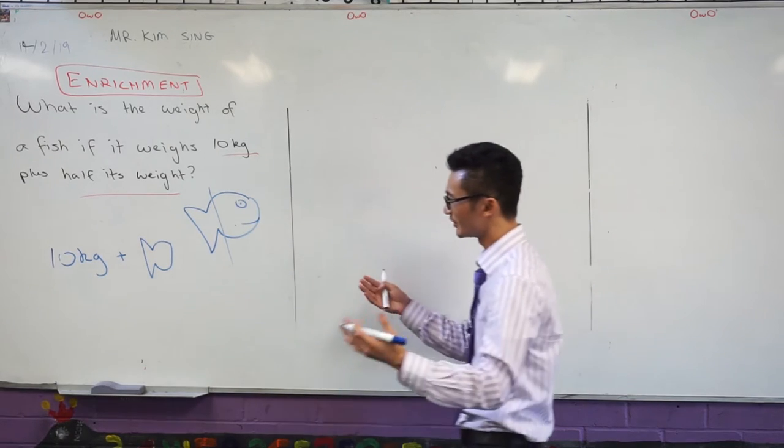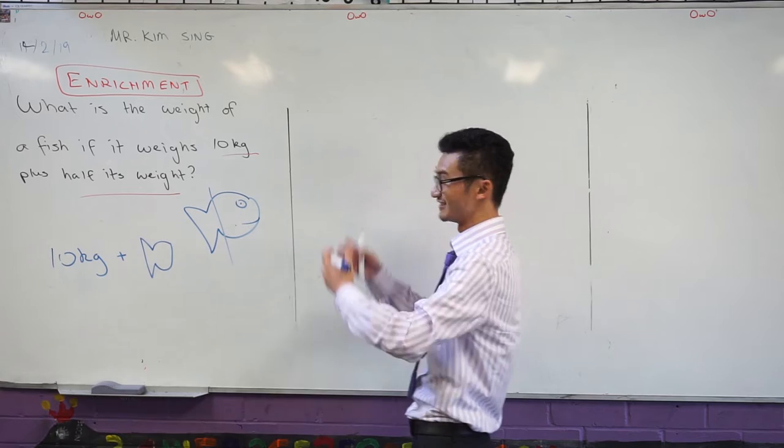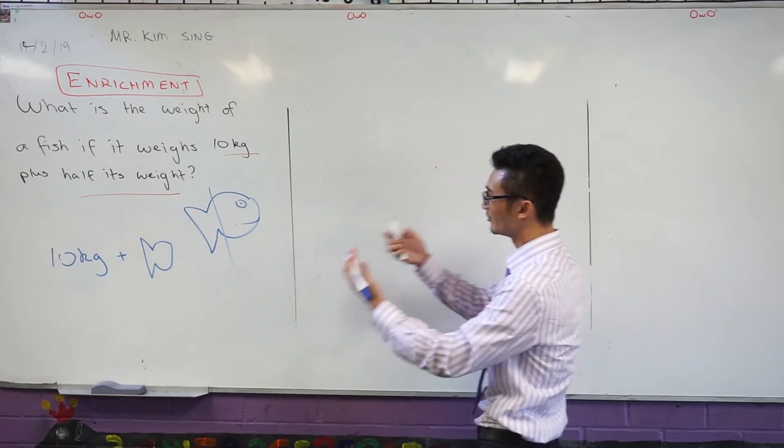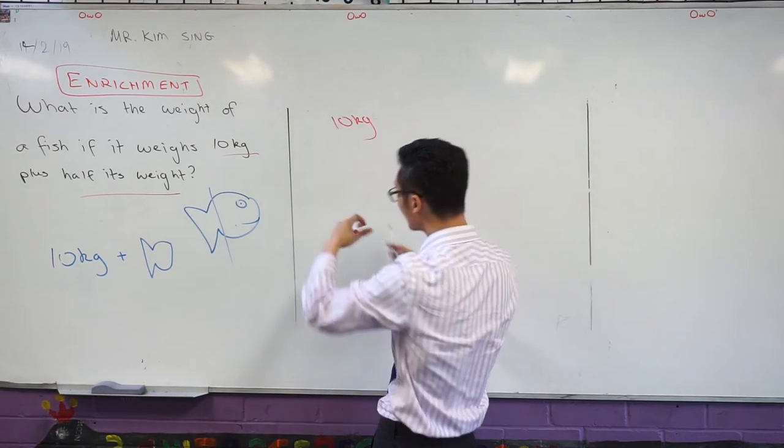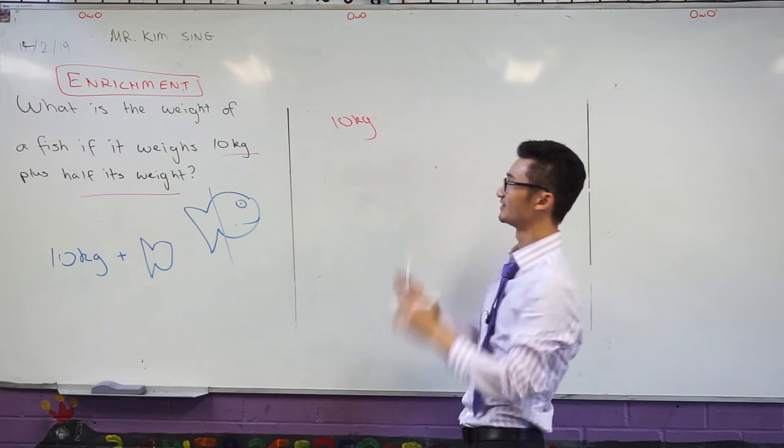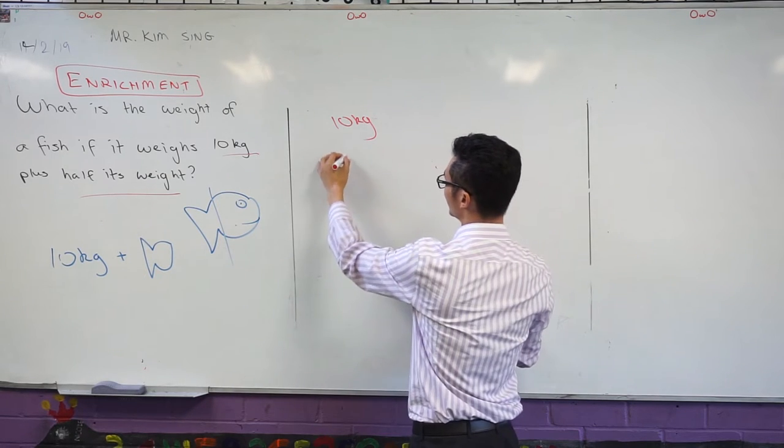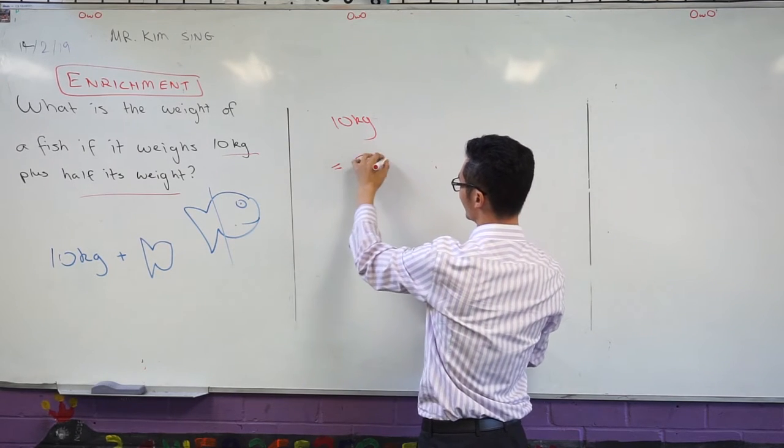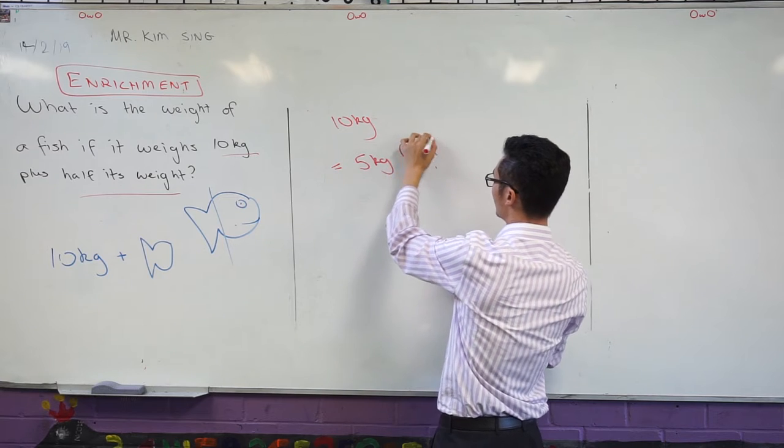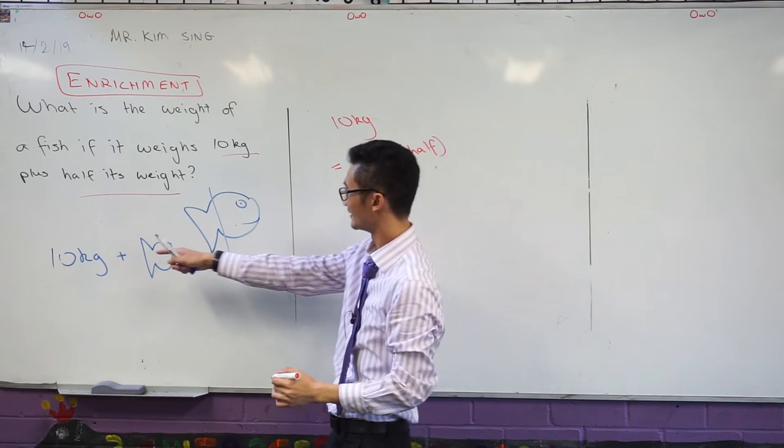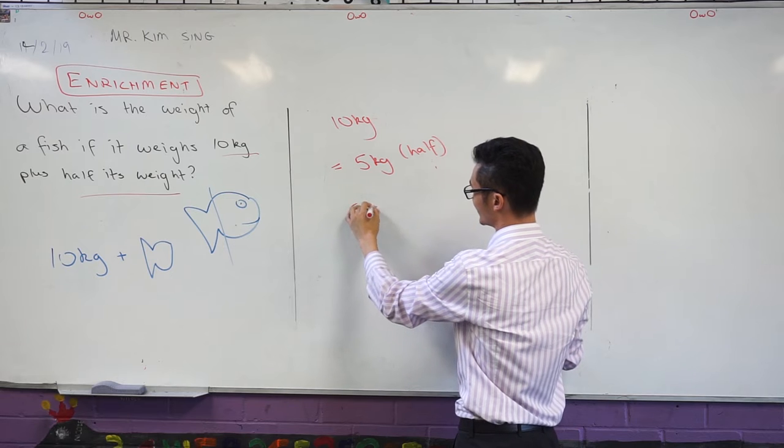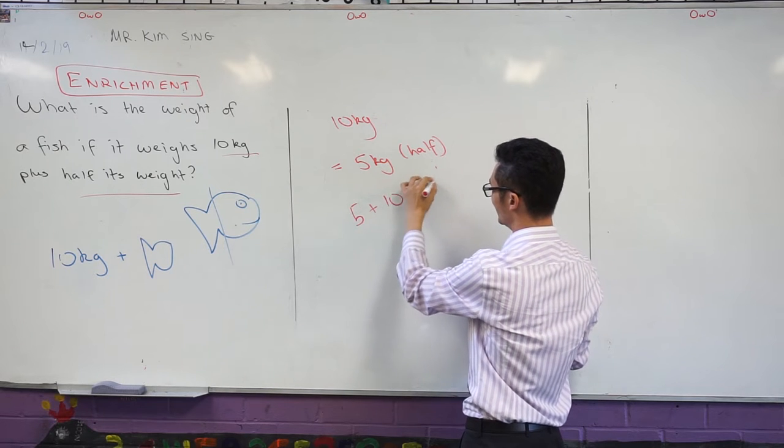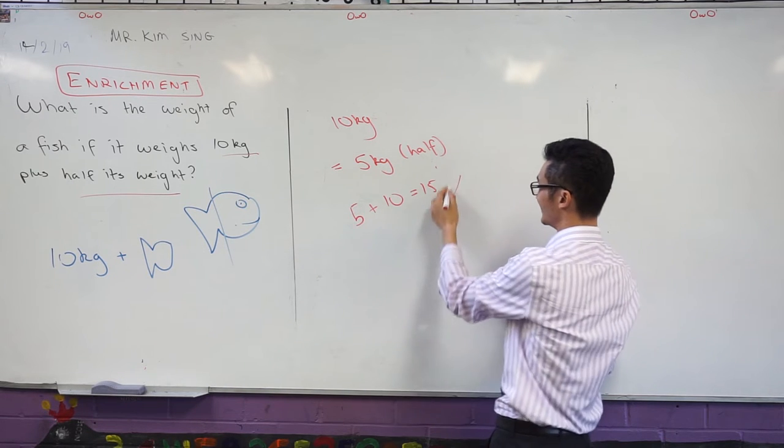And you can just start with trial and error and see what works out. So for example if we say that this fish is 10 kilograms, if I take half of his weight supposedly that would give me 5 kilos because that's half right, if I add that to 10 kilos again I should end up with his weight which is what I started with but that doesn't quite work out right, that doesn't make sense.